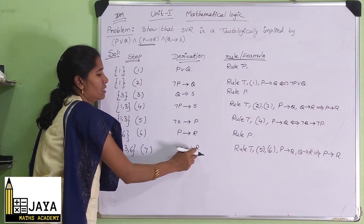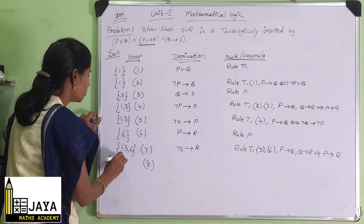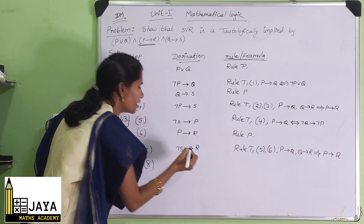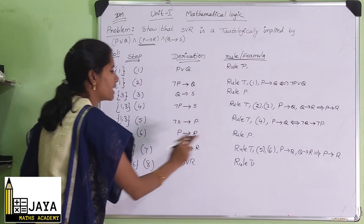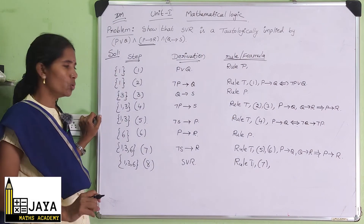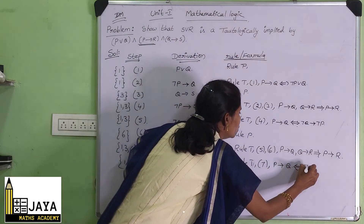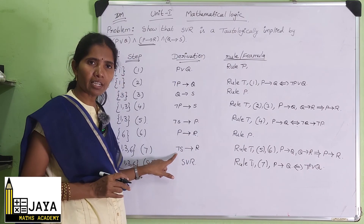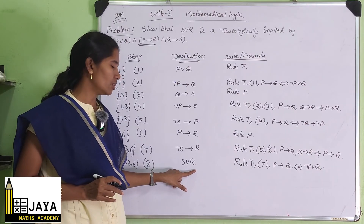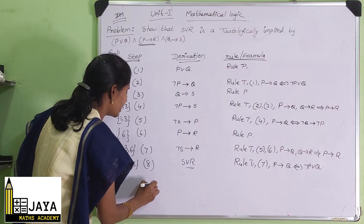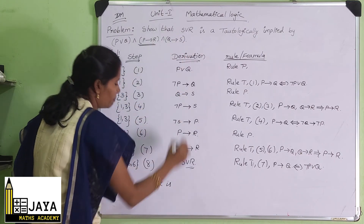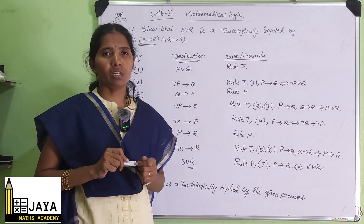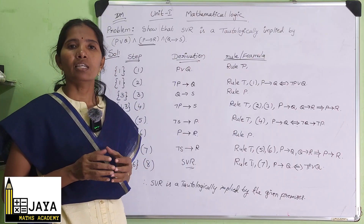Now in step 8 we apply the formula: P implies Q is equivalent to negation P or Q. From negation S implies R, we get negation of negation S or R, which is S∨R. This is the conclusion. Therefore, S∨R is tautologically implied by the given premises. This is the solution for this problem. If you have any doubts, comment below and please subscribe. Thank you.